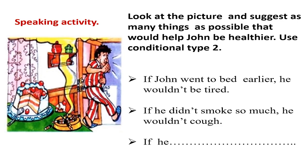Now it's time for speaking — your production stage. Look at this picture and suggest as many things as possible that would help John be healthier, using conditional type 2. If you're with a partner, challenge each other. For example: 'If John went to bed earlier, he wouldn't be tired.' Your friend could say: 'If he didn't smoke so much, he wouldn't cough.' Good luck and see you in the next lesson!